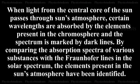When light from the central core of the sun passes through sun's atmosphere, certain wavelengths are absorbed by the elements present in the chromosphere and the spectrum is marked by dark lines. By comparing the absorption spectra of various substances with the Fraunhofer lines in the solar spectrum, the elements present in the sun's atmosphere have been identified.